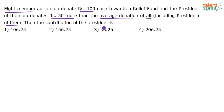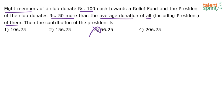Without putting pen on paper, within no time you should eliminate option three. The answer cannot be less than 100 — members themselves have donated rupees 100 each. The president has donated more than the average donation. So the answer has to be more than 100, in fact more than 150. So you can also eliminate option one. Options one and three get eliminated within no time.